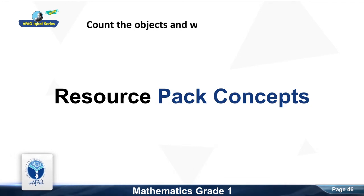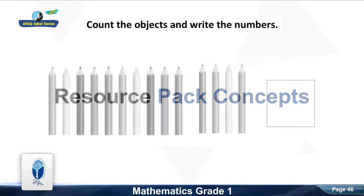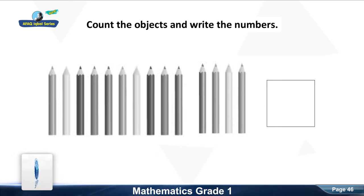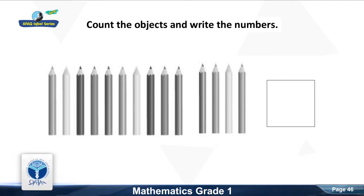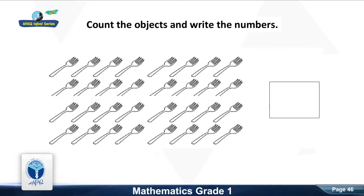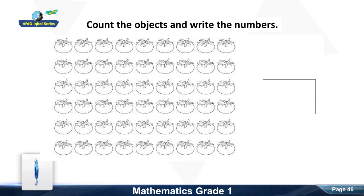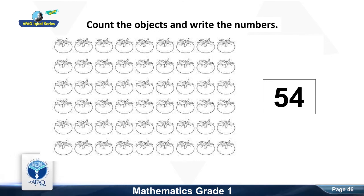Now we move to the next resource pack concept. Count the objects and write the numbers. Count the pencils and write its number. Good, it is fourteen. Count the spoons and write the number. Good, it is thirty-two. Count the tomatoes and write the number. Good, it is fifty-four.